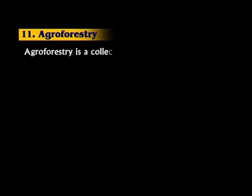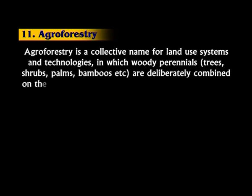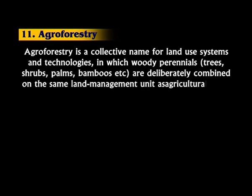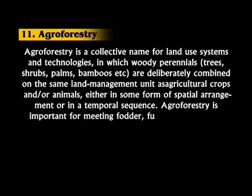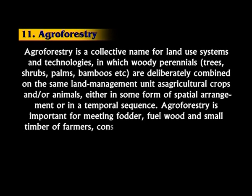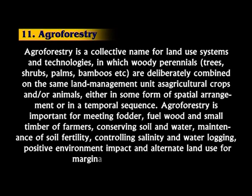Next is agroforestry. Agroforestry is a collective name for land use systems and technologies in which woody perennials — trees, shrubs, palms, bamboos, etc. — are deliberately combined on the same land management unit as agricultural crops and/or animals, either in some form of spatial arrangement or in a temporal sequence. Agroforestry is important for meeting fodder, fuel wood, and small timber needs of farmers, conserving soil and water, maintaining soil fertility, controlling salinity and waterlogging, and providing positive environmental impact and alternate land use for marginal and degraded lands.